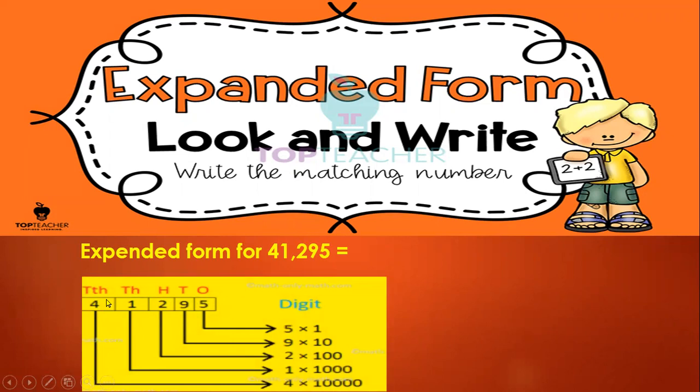Now, when I want to write in expanded form, I have to start from the left digit. So, 4, 10,000, it means 4 times 10,000.